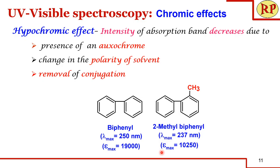This concludes the session. In the next session we'll discuss the factors affecting these chromic effects — specifically what factors lead to bathochromic shift, hyperchromic shift, hypochromic shift, and hyperchromic effects.